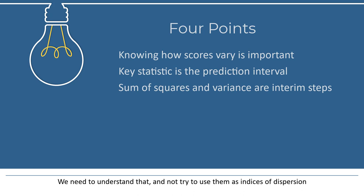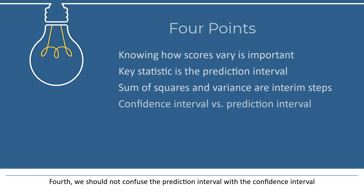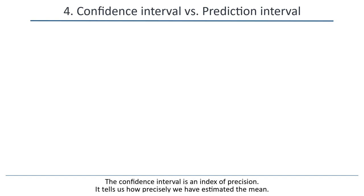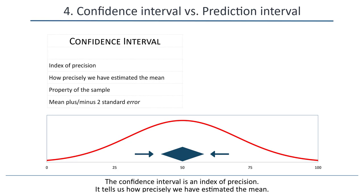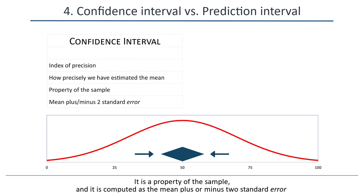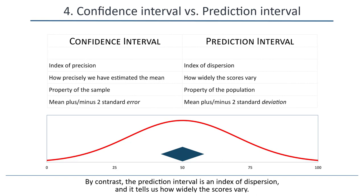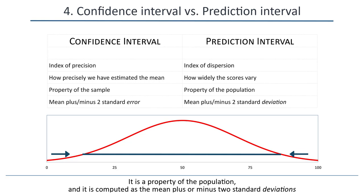And fourth, we should not confuse the prediction interval with the confidence interval. These are two entirely separate things. The confidence interval is an index of precision, and it tells us how precisely we have estimated the mean. It is a property of the sample, and it's computed as the mean plus or minus two standard errors. By contrast, the prediction interval is an index of dispersion, and it tells us how widely the scores vary. It is a property of the population, and it's computed as the mean plus or minus two standard deviations.